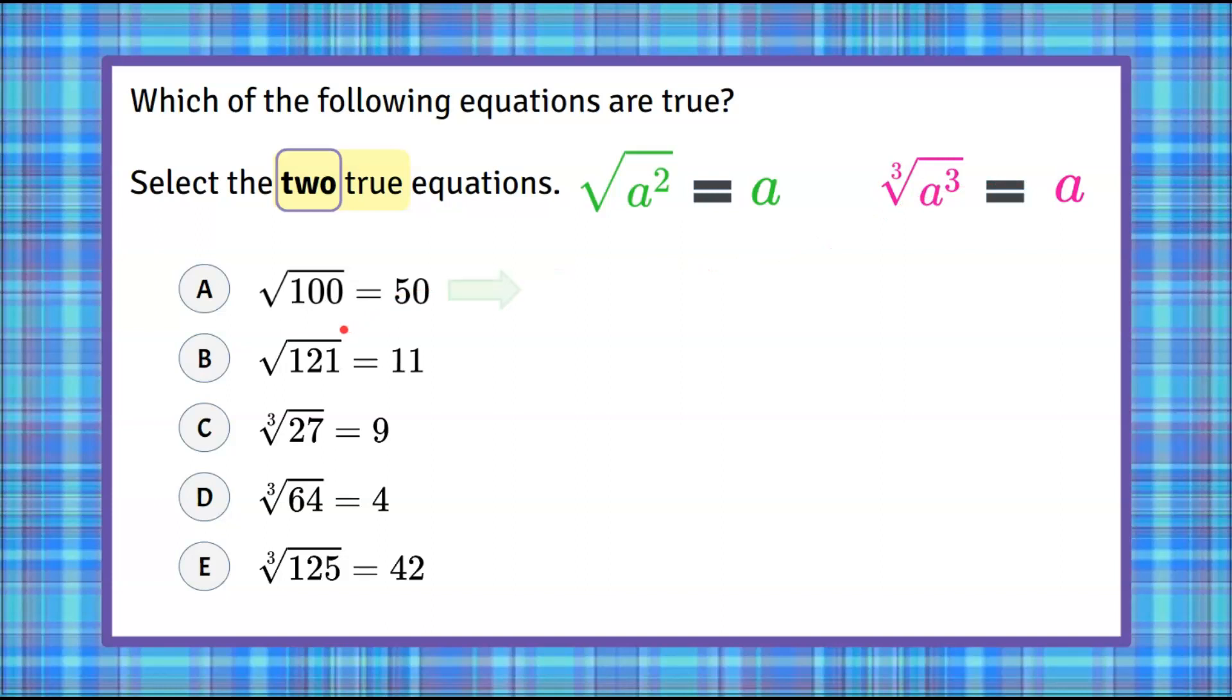All right, let's look at option A. This is a square root with an invisible index of 2, so we're looking for two factors. 100 can be written as 10 squared because 10 times 10 is 100. So the square root of 100, which is the square root of 10 squared, equals 10. That is not 50, so A is not true.